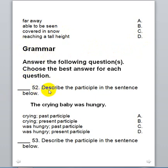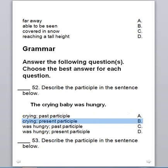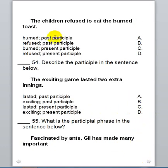Question 52 says: describe the participle in the sentence below. We're looking for the participle in the sentence — 'the crying baby was hungry' — so where's the participle? It's the word 'crying.' Remember, a participle either ends with -ing or -ed. Here 'crying' ends with -ing, and it is a present participle, so we're going to choose B.